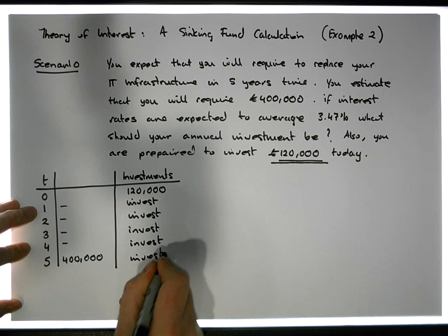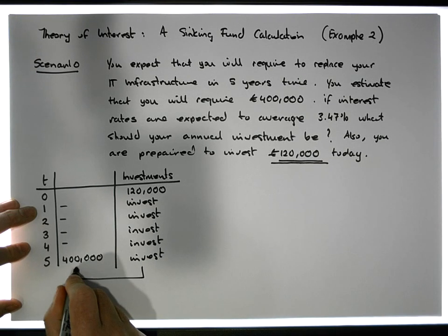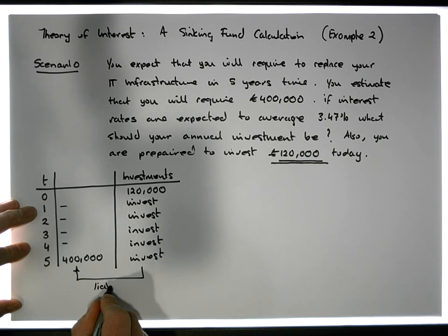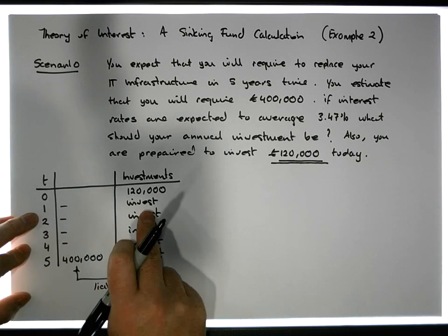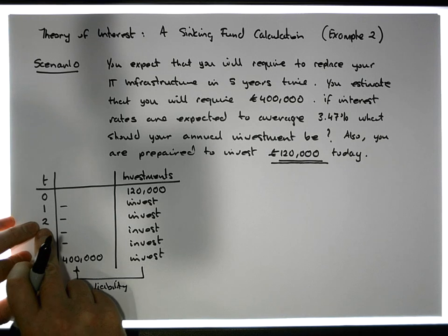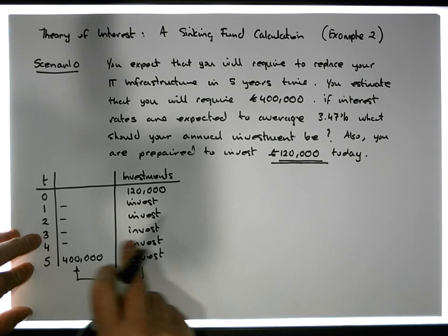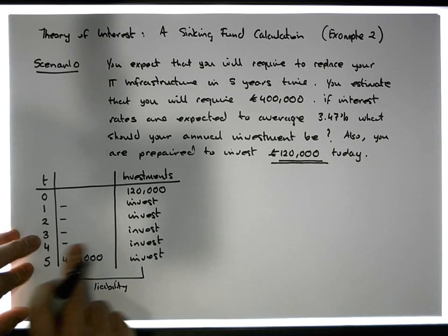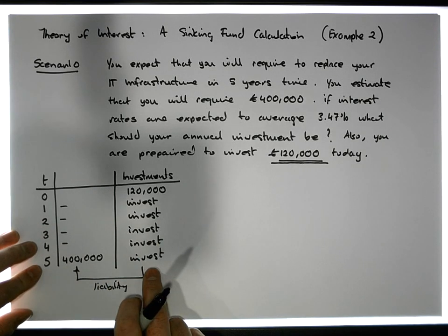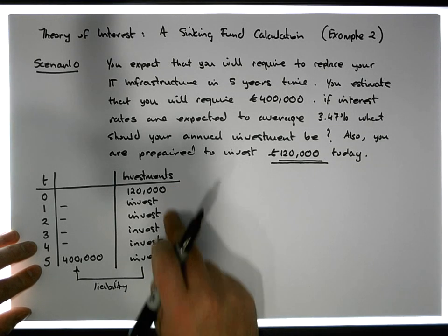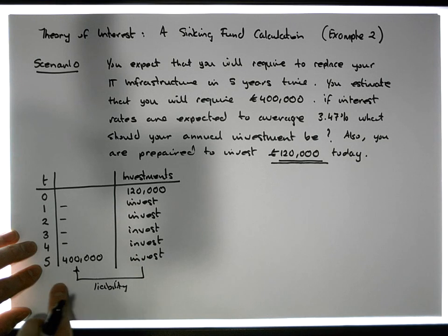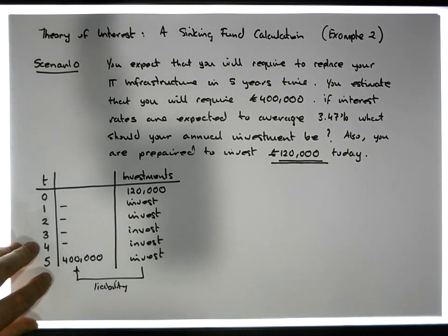In other words, at the end of year one, what should you be investing? At the end of year two, what should you be investing? And so on — at the end of year five, what should you invest, along with your initial 120,000 euro investment, to make sure that you can cover this 400,000 euro liability?